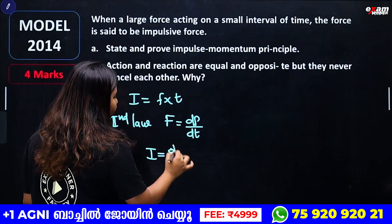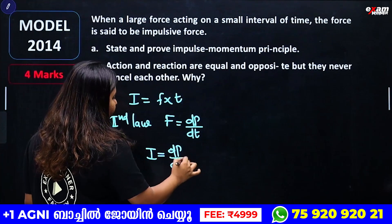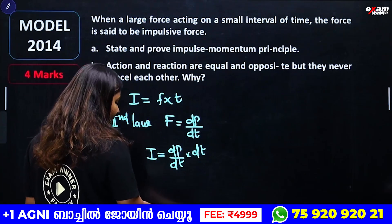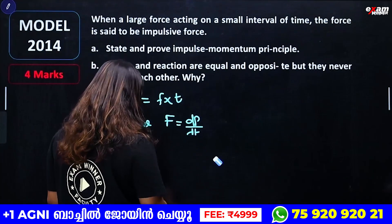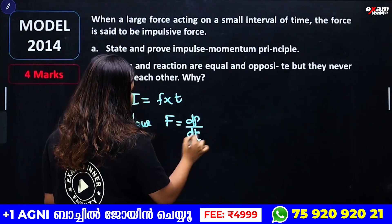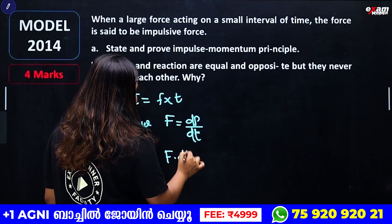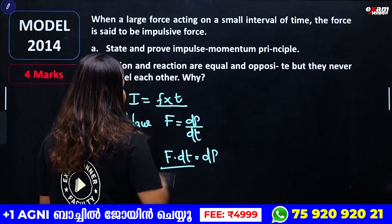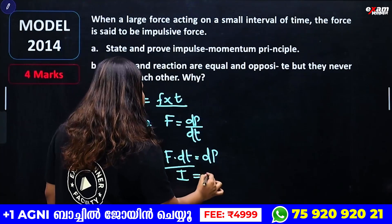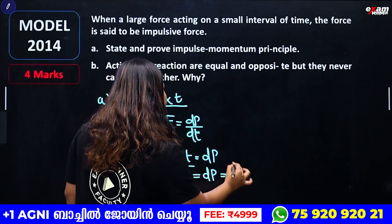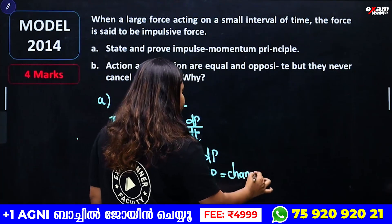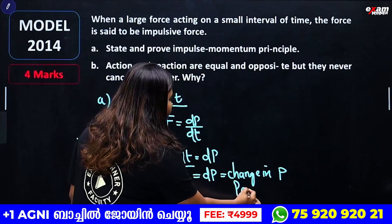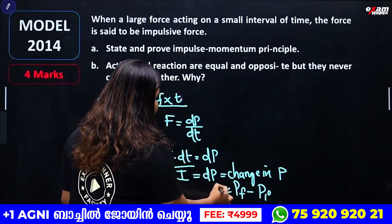Proof: We know F = dp/dt. Integrating, ∫F dt = ∫dp/dt · dt, which gives F · dt = dp. Therefore F × t equals impulse, and impulse equals dp, which is the change in momentum — final momentum minus initial momentum.